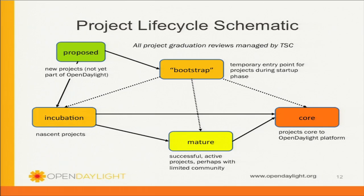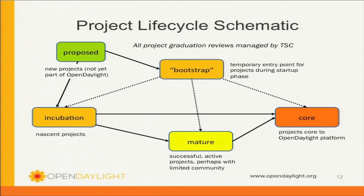From a project lifecycle standpoint, we've taken the Apache model, very similar to OpenStack. Projects are proposed and typically go into an incubation stage if accepted — thus far we haven't had anything not accepted. When we first kicked off we had a bootstrap phase because we had some significant and mature pieces of code that were contributed, so about half of those 12 projects are currently in bootstrap and the other half in incubation. After our first release we will start identifying projects as more stable and mature, moving them to mature state and eventually to core — where core means an absolutely necessary and essential feature within the controller.